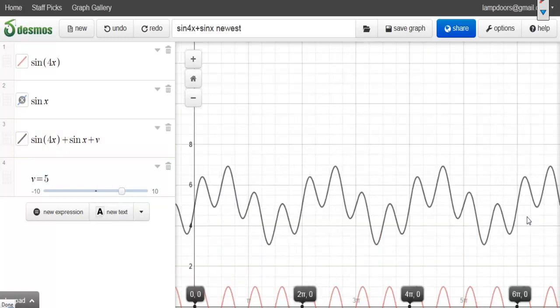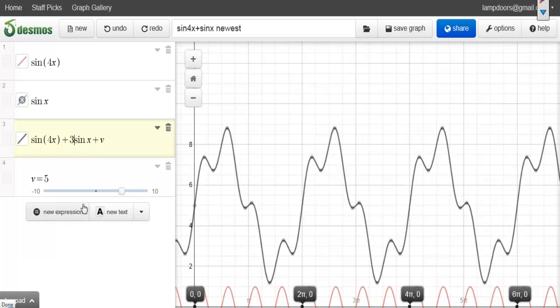Now, it might not be so obvious that this pattern is going to keep repeating itself. In other words, this actually has a period. But a good way to realize that it will is by exaggerating the vertical shift again by putting something like 3 sine x. And then it's pretty clear that there is a pattern here.